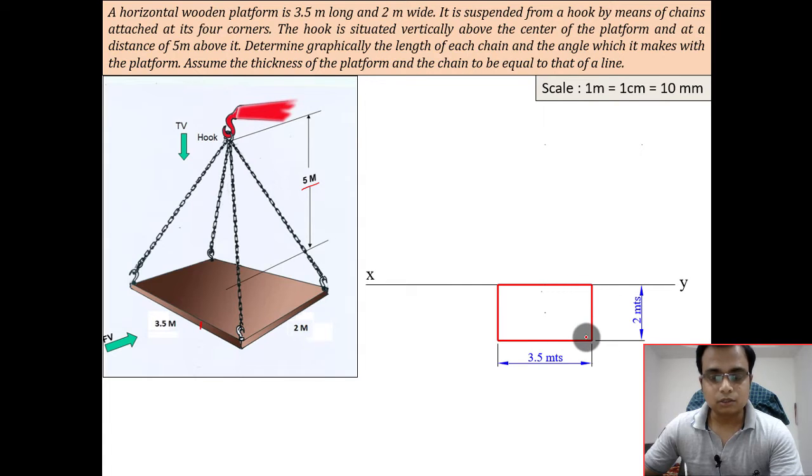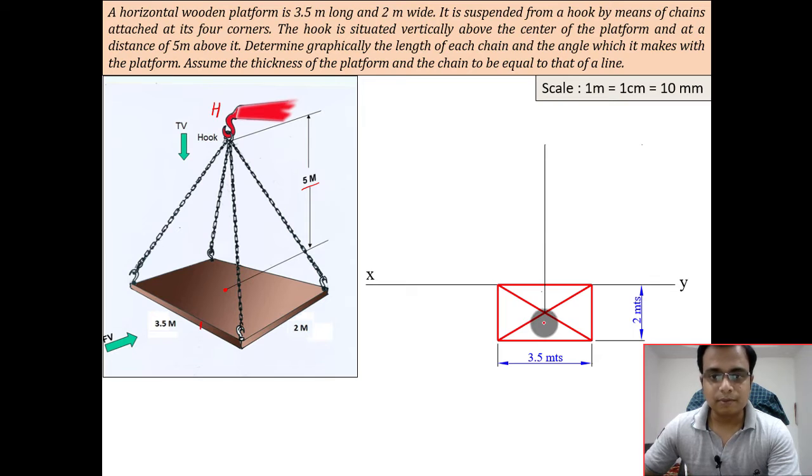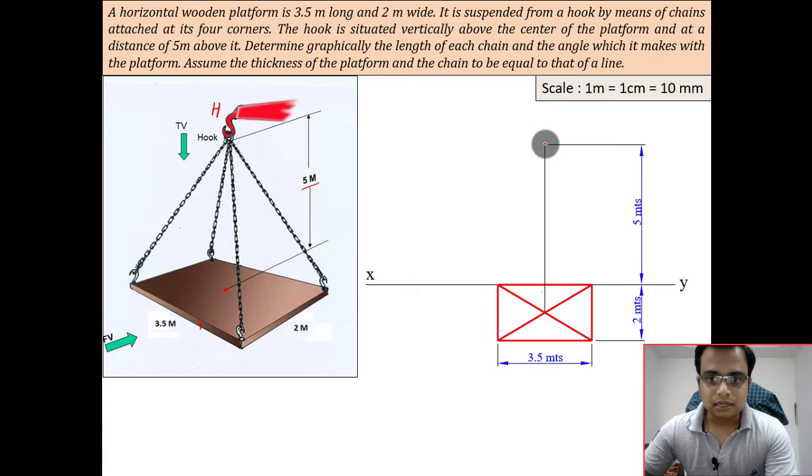This hook over here will appear right here, exactly at the center. We can make it here also by intersecting the diagonals, something like this. This is the top view of the hook. We need to travel in the front view. This distance is five meters, and that's the topmost point. This is the hook in the front view.